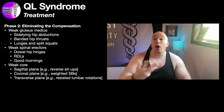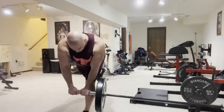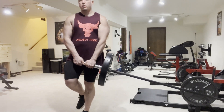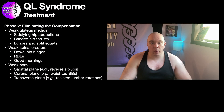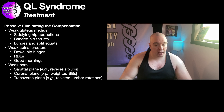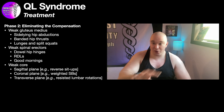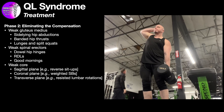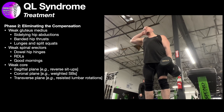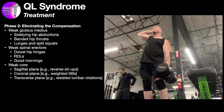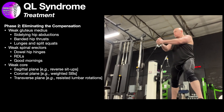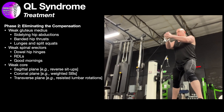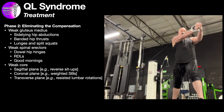For weak spinal erectors, we can do dowel hip hinges to start working on activation, then progress to RDLs or good mornings depending on the level of the patient. For a weak core, we want to address weaknesses in all three major planes. For the sagittal plane, maybe some type of reverse sit-up exercise. For the coronal plane, maybe a weighted side bend — we could start with an isometric version like a farmer carry or suitcase carry, but eventually we want dynamic strengthening.